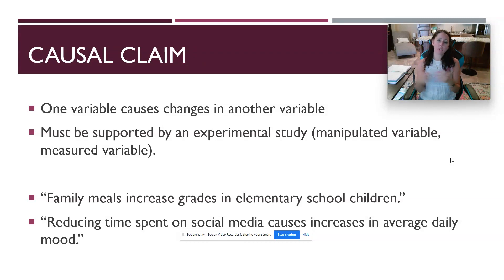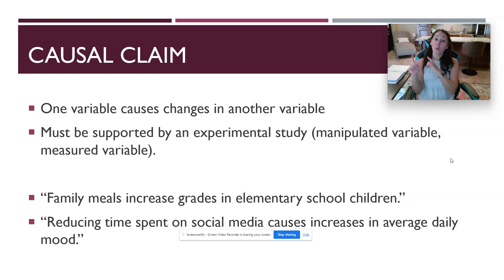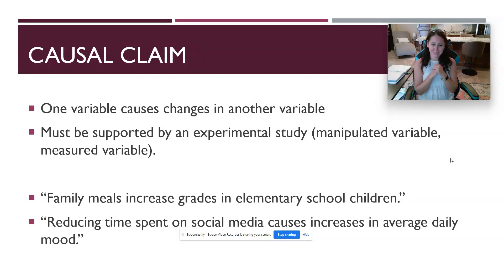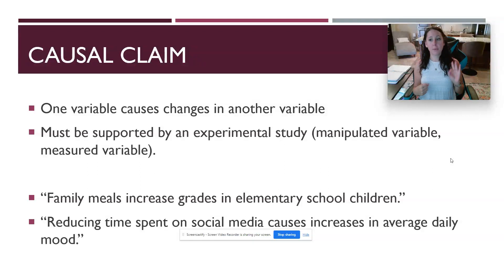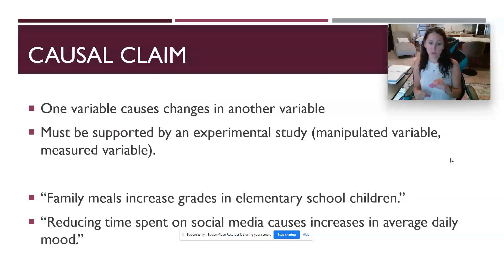Doing actual causal research — randomly assigning groups and manipulating a variable — gives so much more insight as a researcher to say it looks like A is causing B. And then the practical application: we let people know that Facebook and Instagram are not that great for your brain. So that is your introduction to the three different types of claims — frequency, association, and causal — that are important to consider whenever you read or plan a research study.